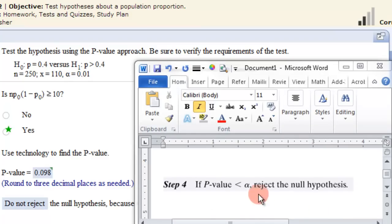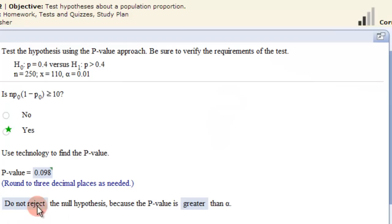So here's one of the statements made in the book. If the p-value is less than the alpha or the level of significance, then you reject the null hypothesis. Or, in other words, if this is greater than alpha, you do not reject the null hypothesis. So we do not reject the null hypothesis because the p-value is greater than alpha.